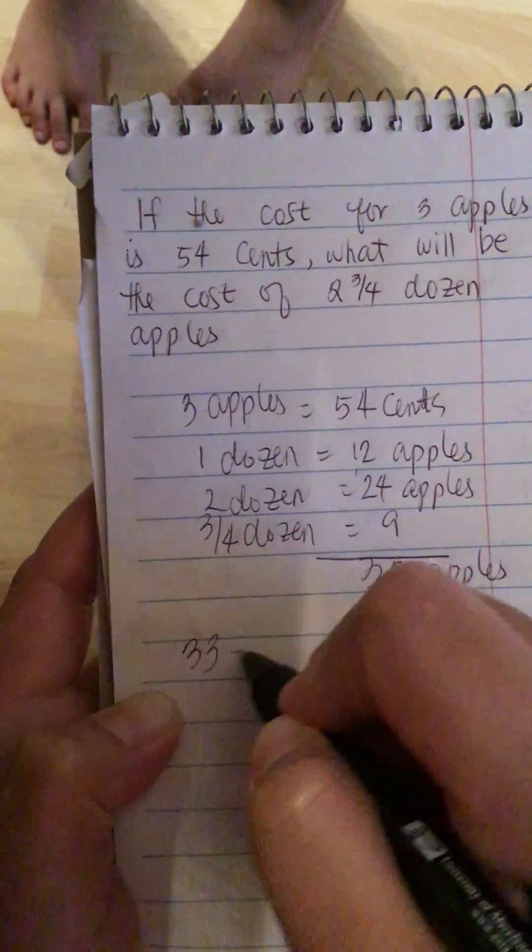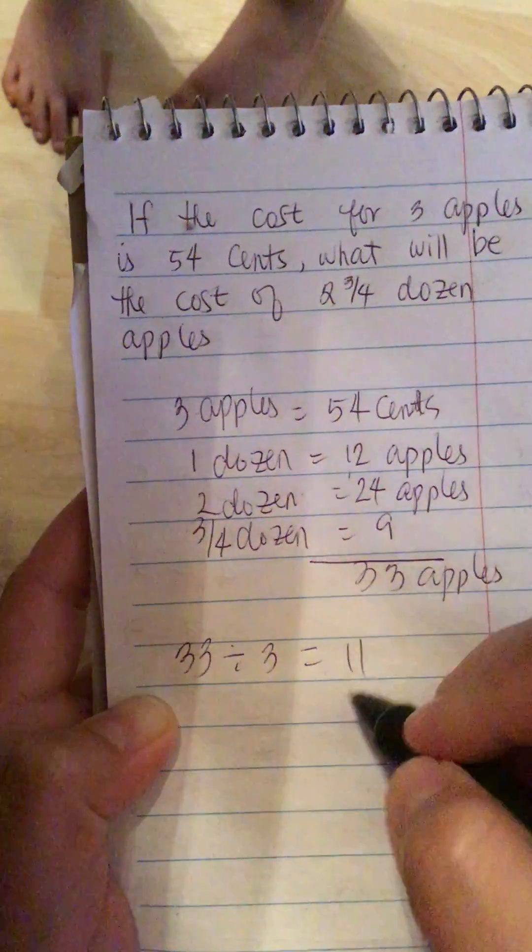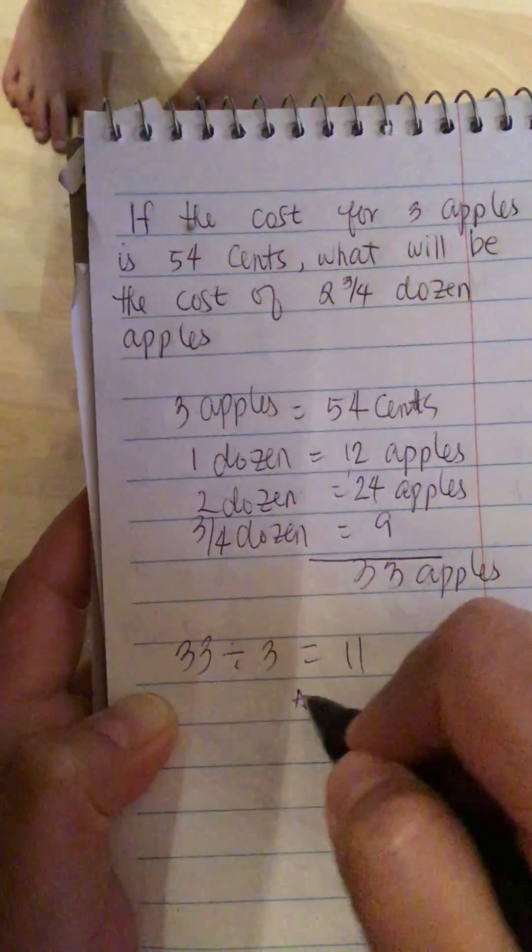33 apples divided by 3 is equal to 11, and if we multiply this by 54 cents.